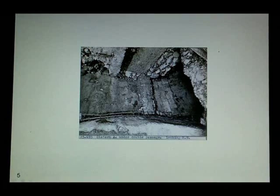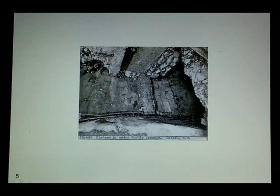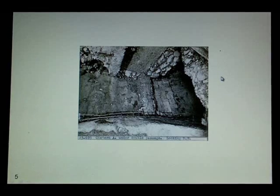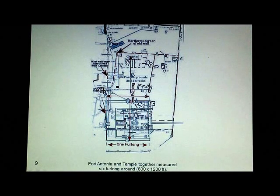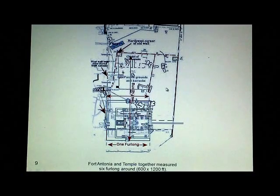As I said before, the temple itself was 600 by 600 feet approximately and Josephus says that Fort Antonia and the temple together measured 6 furlong round, 600 feet by 1,200 feet, meaning that Fort Antonia itself was also approximately 600 by 600 feet. Which took up only a small portion of the temple mount today, not the whole temple mount.